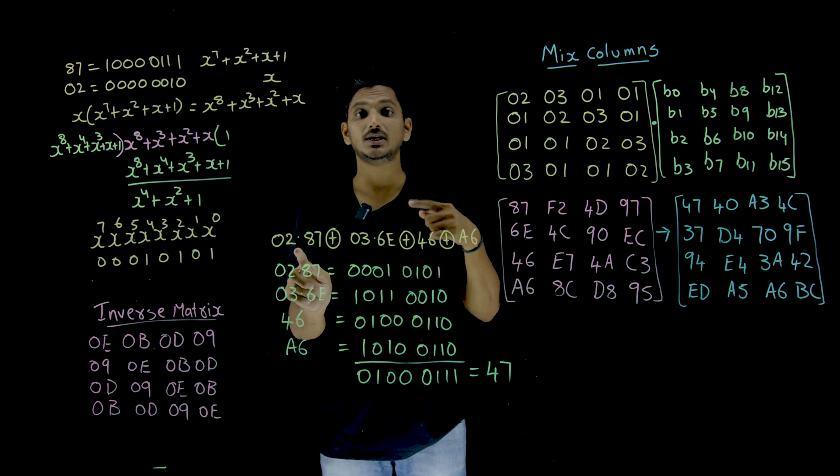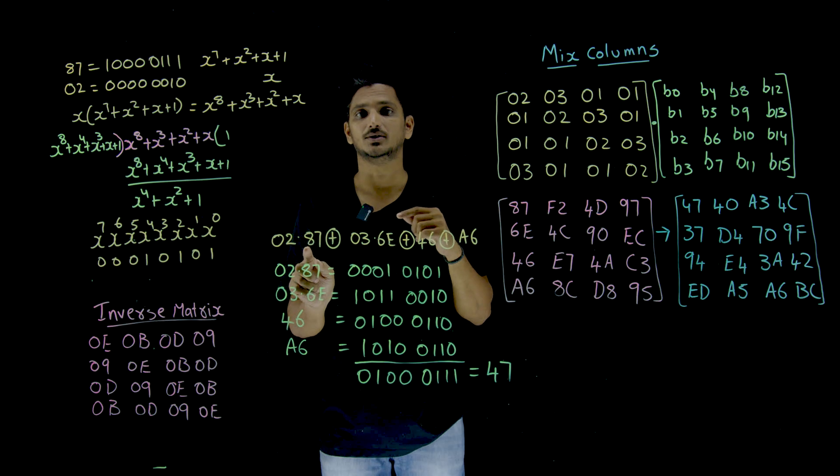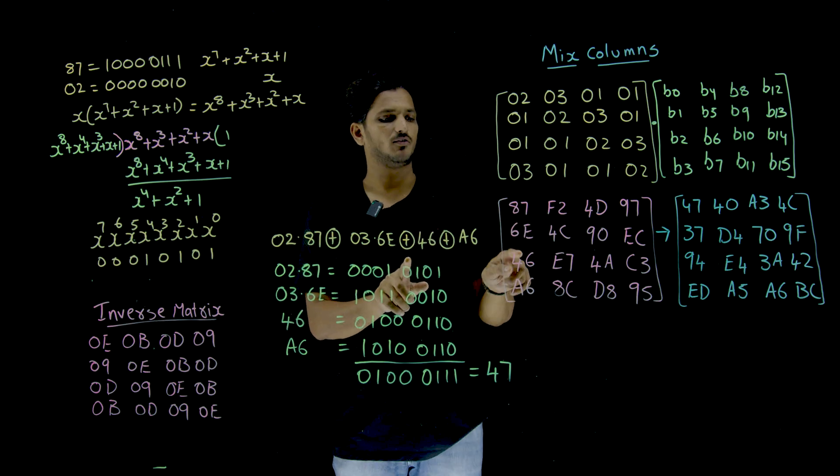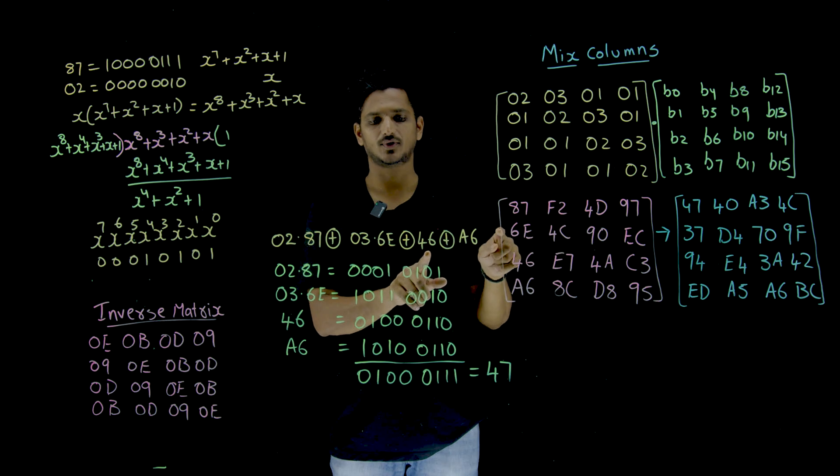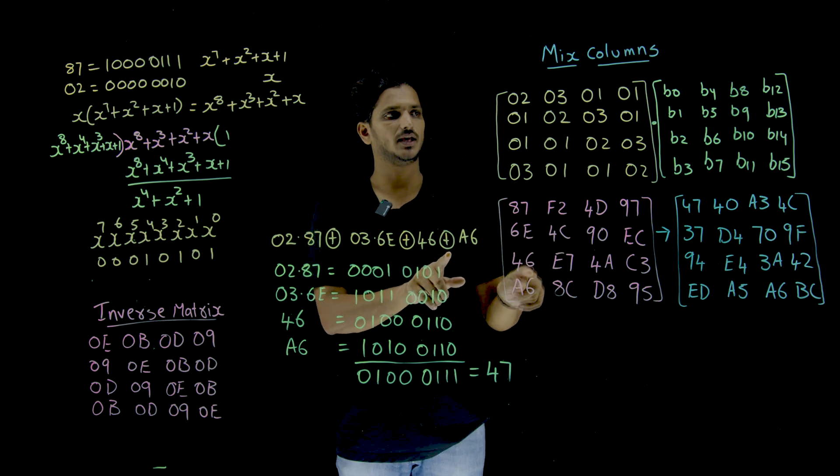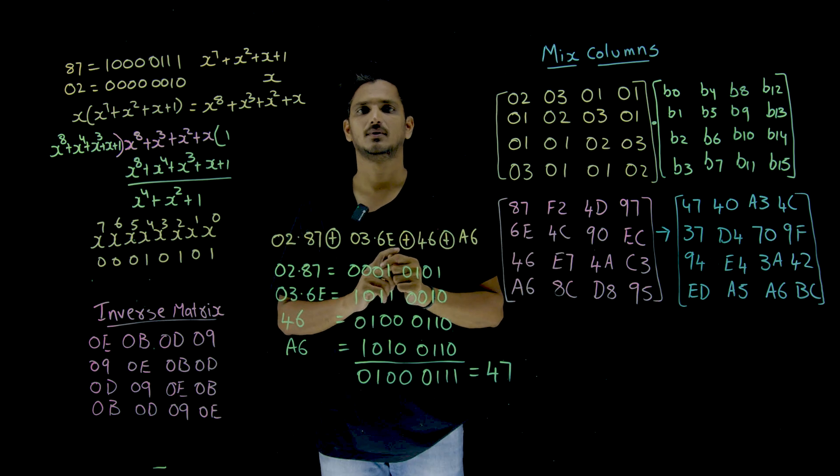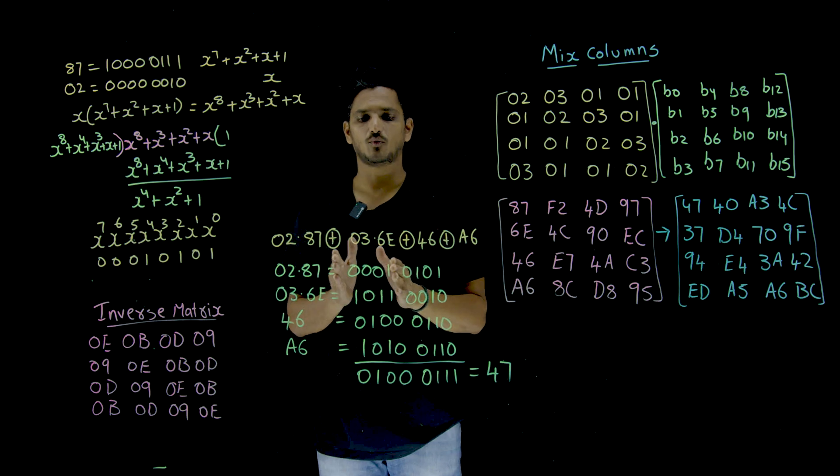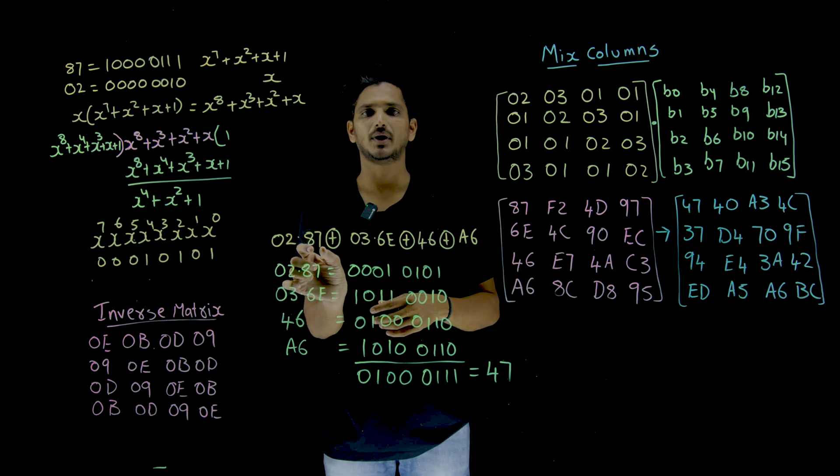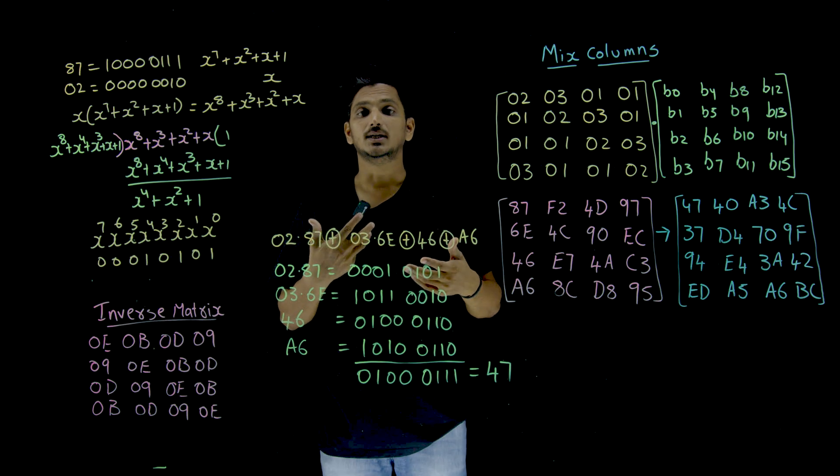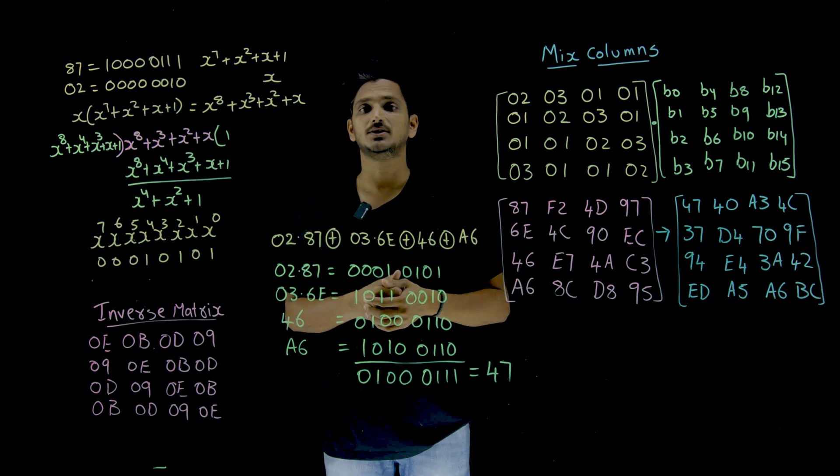Similarly, 46 multiplied by 1 which is 46, addition. A6 multiplied by 1 which is A6. Now, you know what this addition means. First we need to identify 02 multiplied by 87. How this GF of 2 power 8 multiplication is done?